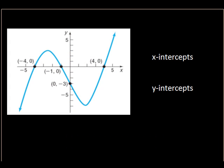Hopefully you remember this from our last lecture where we talked about x-intercepts and y-intercepts. For the x-intercepts, your y-value is always zero — that's going to be important when we try to find the x and y-intercepts. For the y-intercept, remember your x-value is always zero. So let's find the x and y-intercepts algebraically.